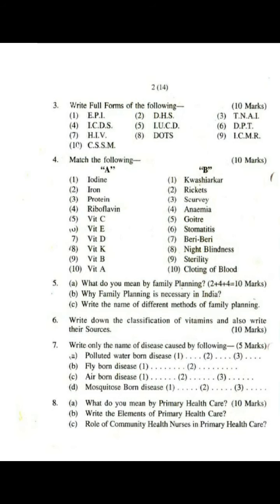Question number 6 carries 10 marks: Write down the classifications of vitamins and also write their sources. Question number 7 carries 5 marks: Write only the names of diseases caused by the following — waterborne diseases, one mark each.